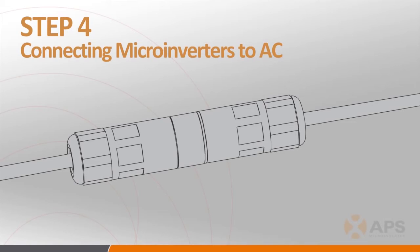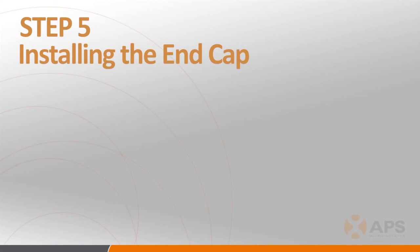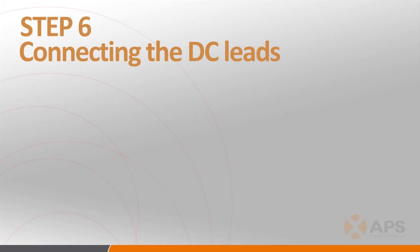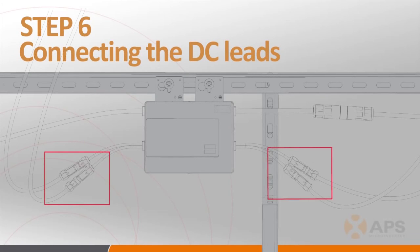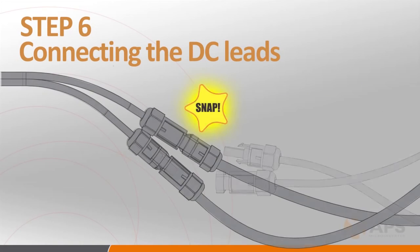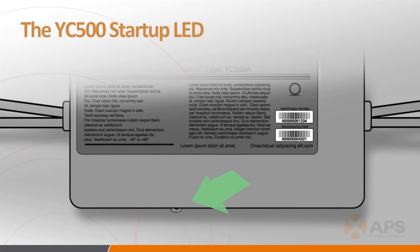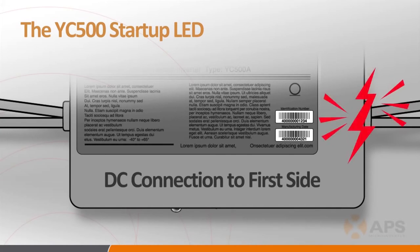Once the AC connections have been made, you're ready to move on to Step 5: installing the protective end cap onto the open AC connector on the last inverter in each branch circuit. Step 6: place the PV modules on the racking system and connect the DC leads from each of the PV panels to the microinverters, making sure that the connectors are securely snapped into place. The LED on the microinverter will flash green three times when DC power is first applied, indicating a successful connection. This startup indication only happens when DC power is applied to the first side of the connected inverter. Check the DC connectors if you don't see the green startup LED flash.